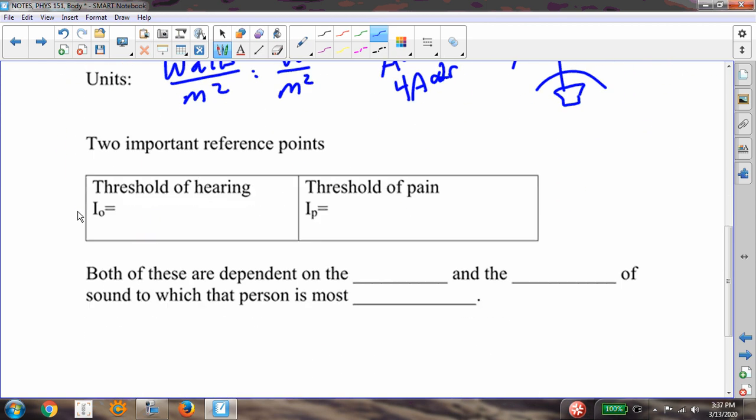There are a couple of important reference points that you'll need to know. The threshold of hearing, this is the intensity, the lowest intensity of sound that you can hear. And it's equal to 10^-12 watts per square meter.